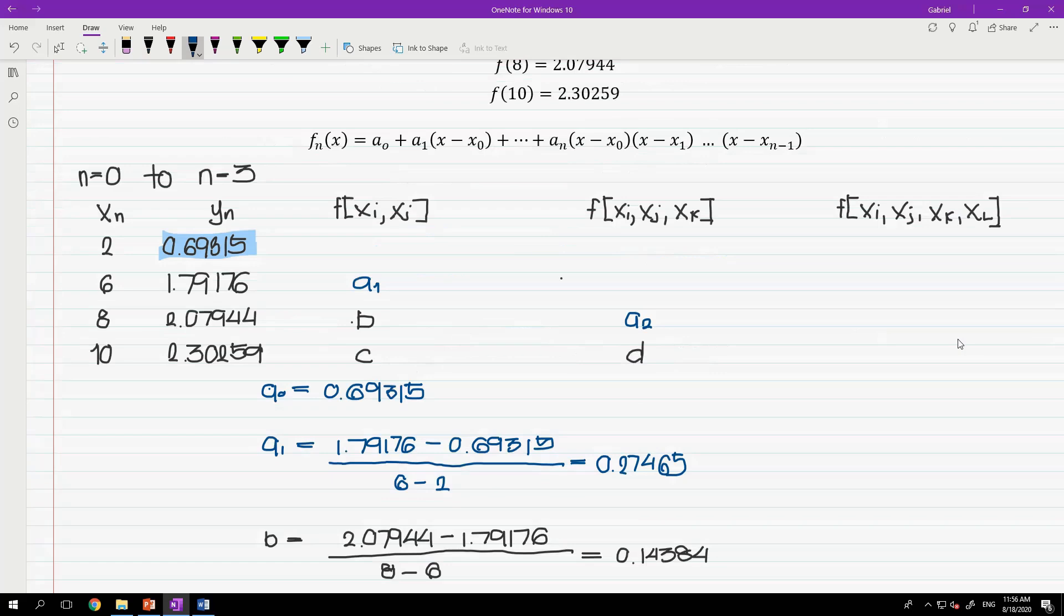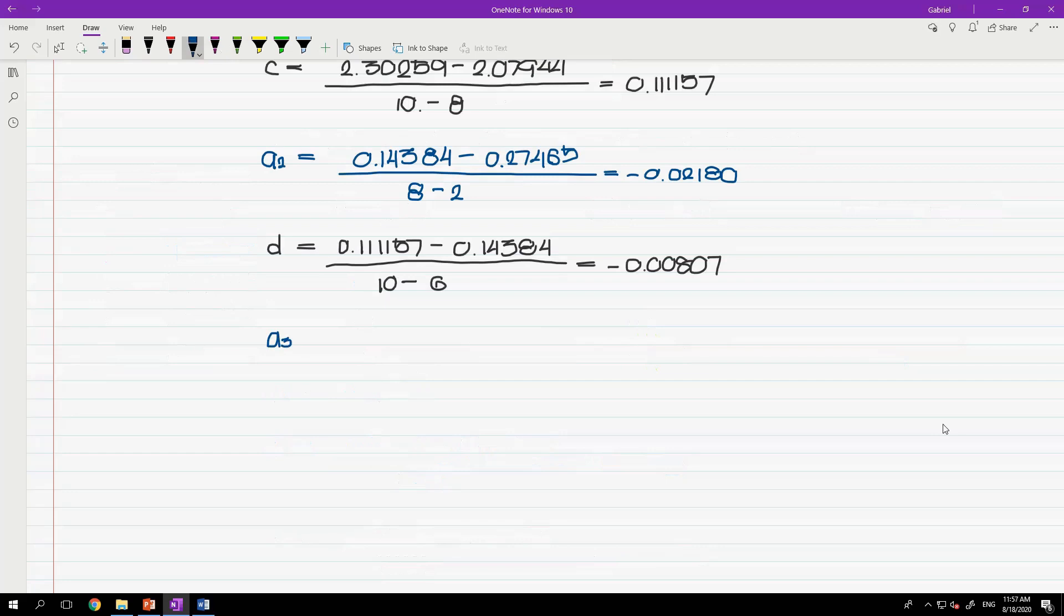Well, for the last coefficient, it is equals to the difference of these terms divided by the difference of these terms. So, a sub 3 is equals to negative 0.00807 minus negative 0.02180 all over 10 minus 2. And that is equals to 0.00172.